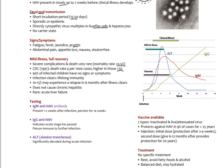90% of infected children actually have no signs or symptoms. Once the infection clears, there's lifelong immunity. About 10 to 15% can experience a relapse in six months after the illness clears. This does not go on to cause chronic hepatitis. The acute liver response is able to clear the virus and there's rarely any acute liver failure.